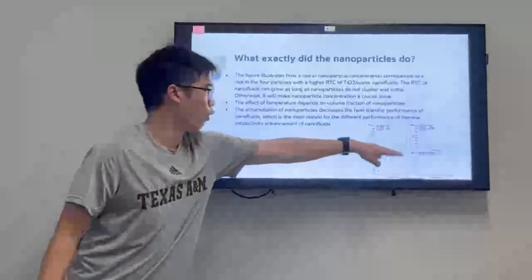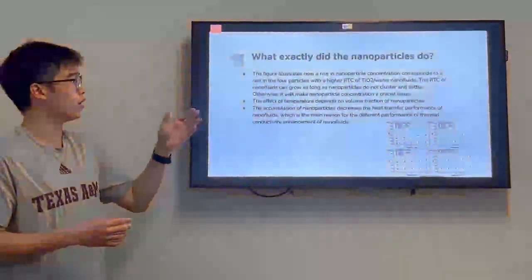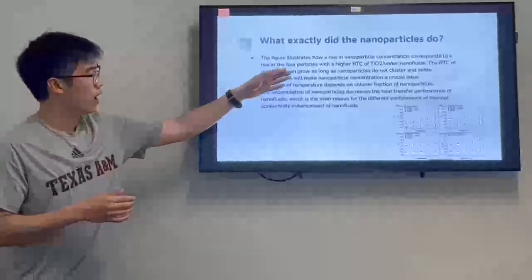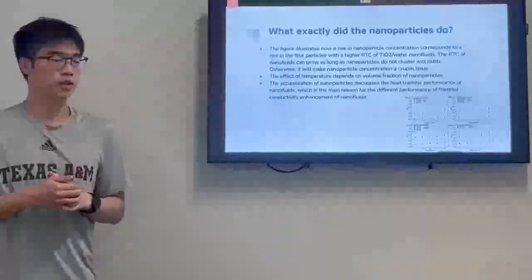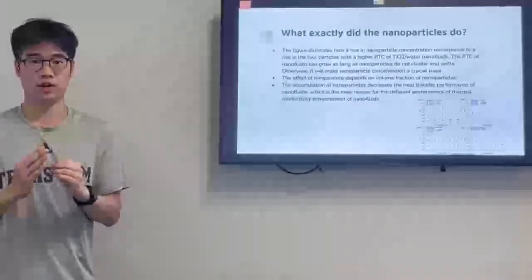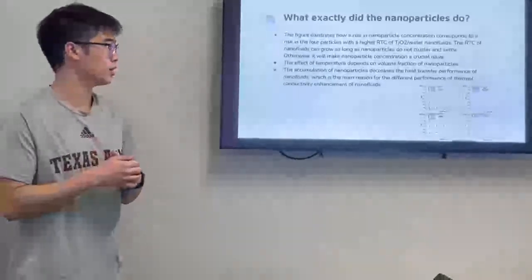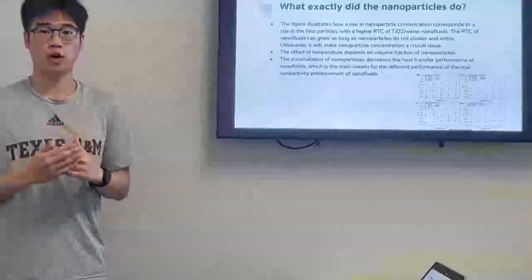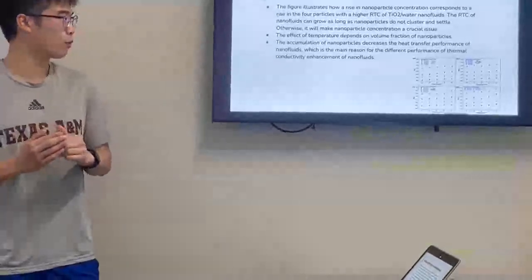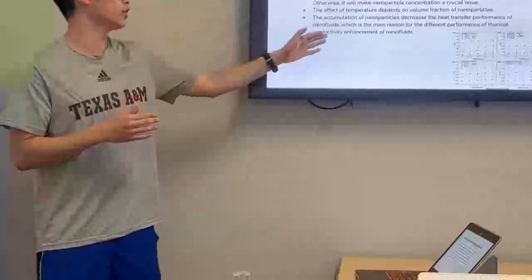I have a figure right here. There are four shapes of nanoparticles. It is the figure of how the concentration rises, corresponding to how the particle rises with higher RTC in water nanofluids. The RTC of nanofluids can grow as well as nanoparticles do not cluster and settle. Otherwise nanoparticle concentration would be a significant or crucial issue right here. Effect of temperature depends on volume fraction of nanoparticles. The accumulation of nanoparticles decreases the heat transfer performance of nanofluids, which is the main reason for the different performance of thermal conductivity enhancement of nanofluids.